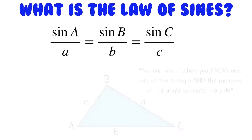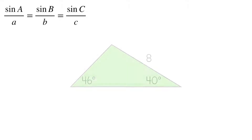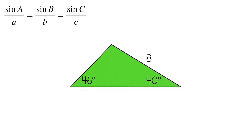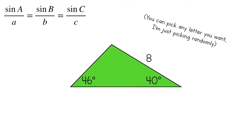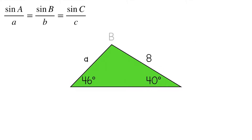We can use the law of sines to solve this triangle. We have a side length and we know the opposite angle, so we're all set. I'm going to label the parts: I'll call this side here side A, which means this is angle A. And I'll call this angle here angle B, which means this side is side B. Now I'm going to set up the ratio for this triangle — it's going to be sine of 46 over 8.